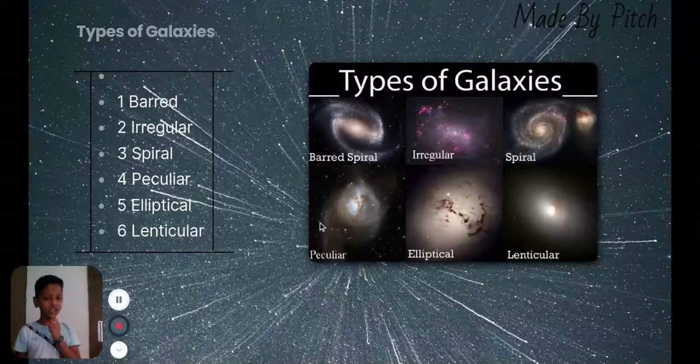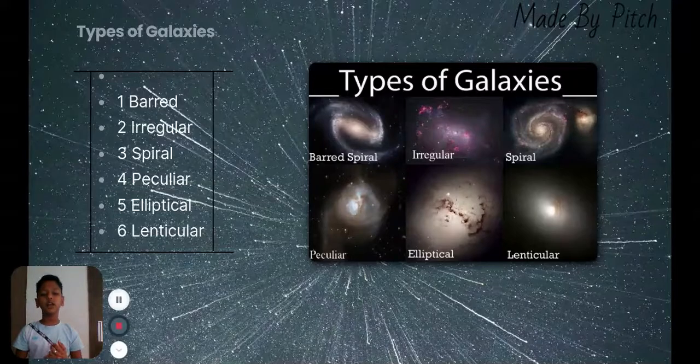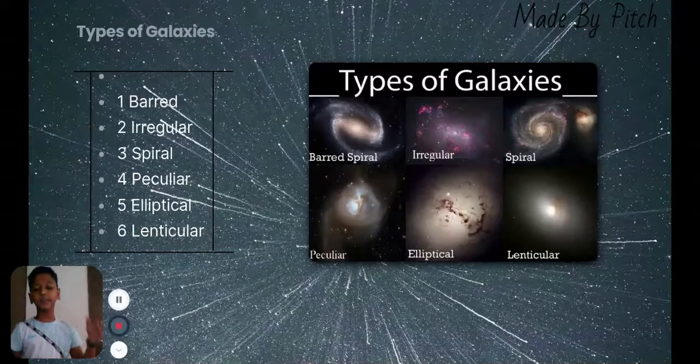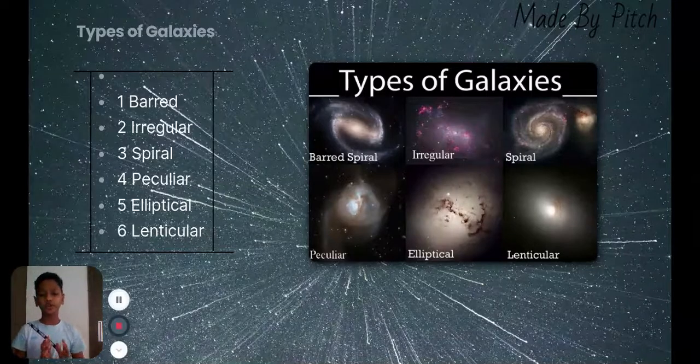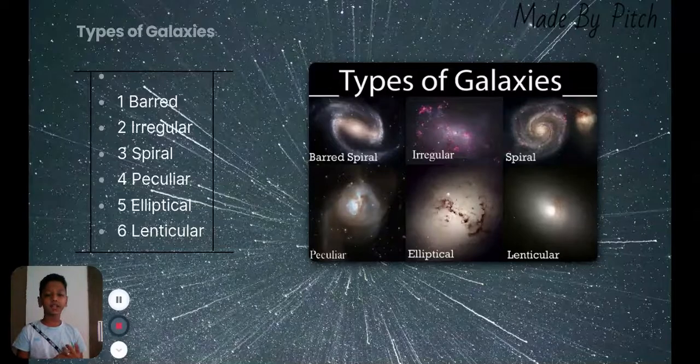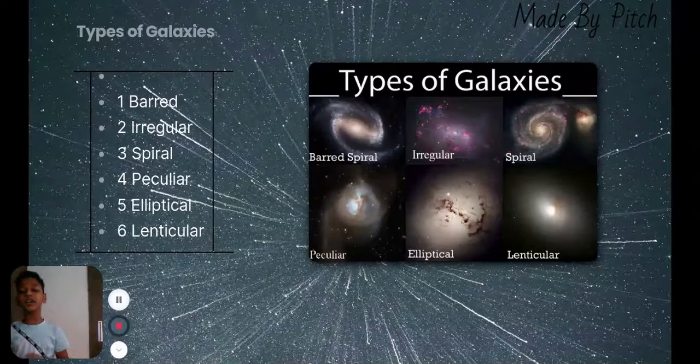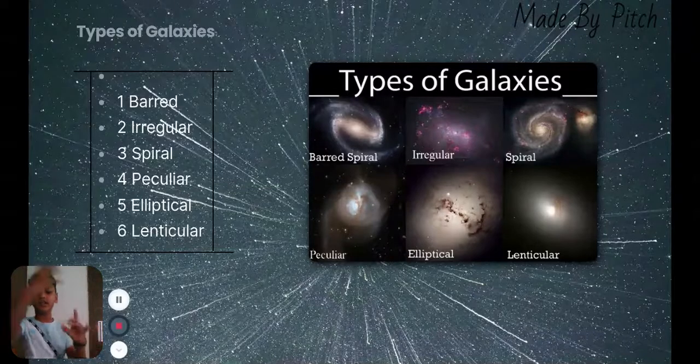So, central bulge, we will learn in... We will learn a few minutes after. So, let's move on to elliptical. Elliptical is a sphere which has everything in it but random.